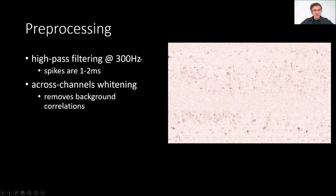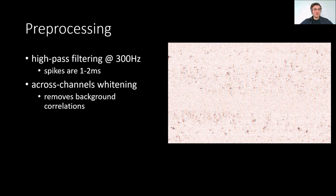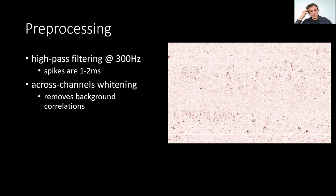Now let's talk about the core of the algorithm — the part that has stayed unchanged since essentially 2016. Preprocessing includes high-pass filtering at 300 Hz. Why 300 Hz? Because spikes are about one or two milliseconds, and 300 Hz corresponds to a period of about three milliseconds. So a high-pass filter at 300 Hz won't throw out the spikes, though it will modify their shapes a little. It will throw out background fluctuations and LFP. Depending on your Neuropixels probe, the standard ones now have a separate band for LFP and action potentials, but there'll be some spillover that you can throw out with this high-pass filtering.